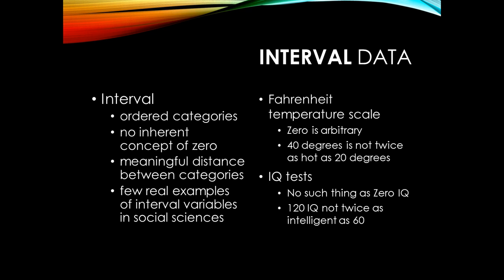Similarly with IQ tests: if someone has an IQ of 120, that doesn't mean they are definitively and measurably twice as clever as someone with an IQ of 60. It's a bit more ambiguous and arbitrary than that, so it can't be put in quite such concrete terms. There aren't that many interval forms of data in the world; in psychology, the IQ test is a good example, but there aren't many others.